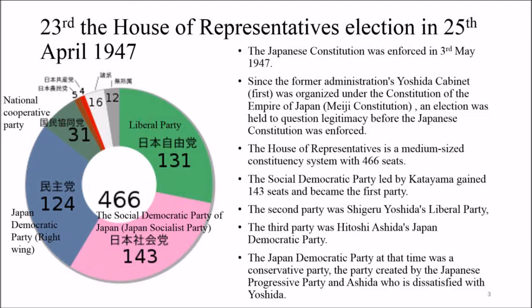The 23rd House of Representatives election was held on 25th April 1947. The Japanese constitution was enforced on 3rd May 1947. Since the former Yoshida cabinet was organized under the constitution of the Empire of Japan, an election was held to question its legitimacy before the new constitution was enforced. The House of Representatives used a medium-sized constituency system with 466 seats. The Social Democratic Party led by Katayama gained 143 seats and became the first party.